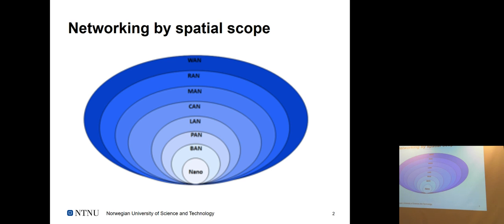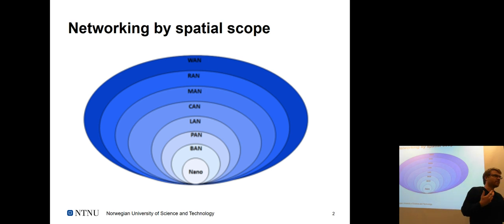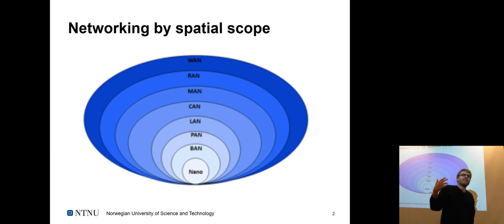Networking extends from the nano level — tiny devices communicating at very close distances with very limited power — potentially injected into biological entities for tracking — all the way up to wide area networks, which we largely equate with the internet. We need to be clear about which scope we're talking about.